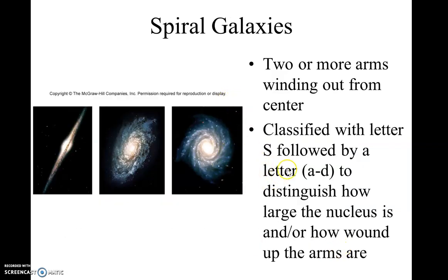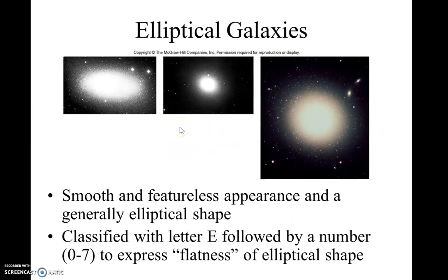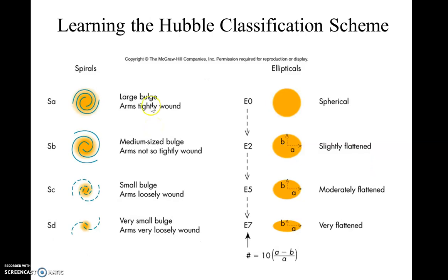Spiral galaxies — he labeled them S. He further labeled them in subcategories from A to D, where A was the most tightly wound and D was the most loosely wound. Then there are elliptical galaxies. He called them E0 through E7, where E0 was very spherical and E7 was more egg-shaped. That is the classification scheme he came up with.